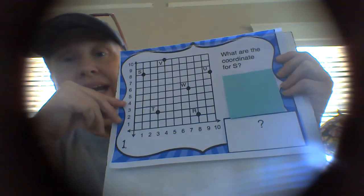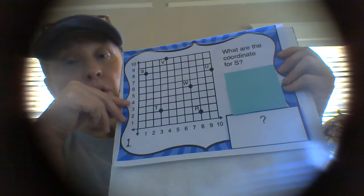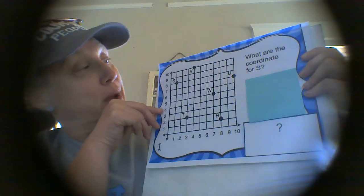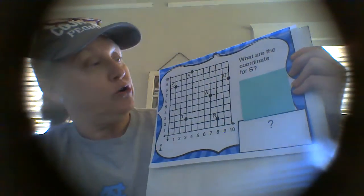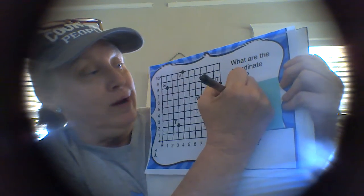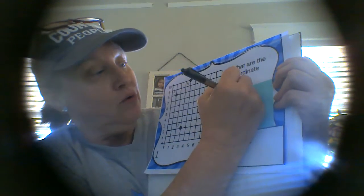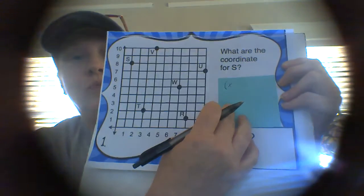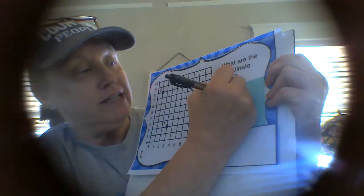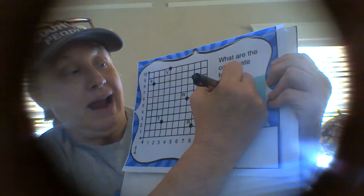And when we read coordinate points or ordered pairs on a coordinate grid, the way we read them and also write them is we read our x-axis first, comma, and then our y-axis.